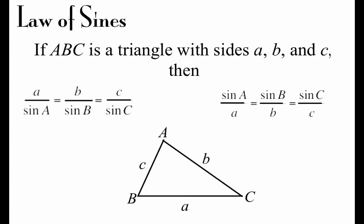Here's what our Law of Sines is going to look like. If we've got a triangle ABC that has side lengths of little a, little b, and little c, there are two different forms. On the left, it's the sides on top and the sine of the angles on the bottom: a over sine A, b over sine B, c over sine C. On the right-hand side, the fractions are flipped: sine A over a, sine B over b, and sine C over c.